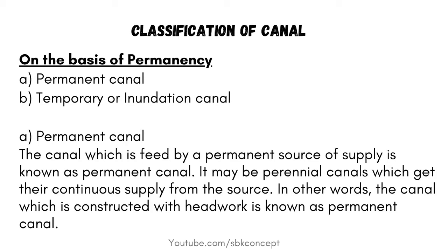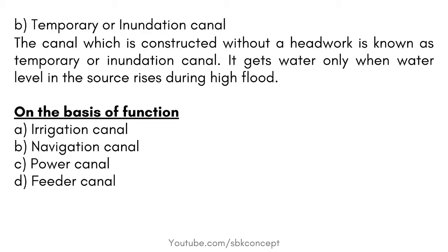Classification of Canal: On the basis of permanency, there are Permanent Canal and Temporary or Inundation Canal. The canal which is fed by a permanent source of supply is known as Permanent Canal. It may be perennial canals which get their continuous supply from the source. In other words, the canal which is constructed with headworks is known as Permanent Canal. The canal which is constructed without headworks is known as Temporary or Inundation Canal. It gets water only when the water level in the source rises during high flood.